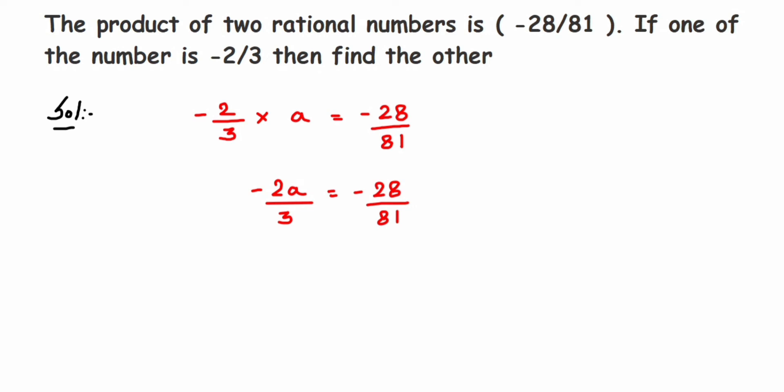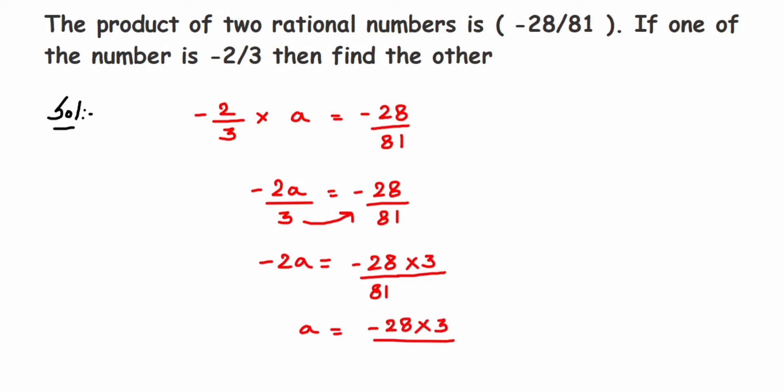I don't want minus 2 and 3 on the left-hand side — I just want a single variable 'a'. So I'm going to transpose minus 2 and 3 to the other side. First, transposing 3: since 3 is in the denominator (division), when you transpose a number from division it comes into multiplication. So minus 2a equals minus 28 by 81 multiplied by 3. Similarly, minus 2 is in multiplication with 'a', so when transposed it comes into division. So 'a' equals minus 28 multiplied by 3.